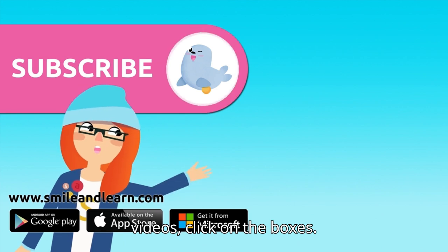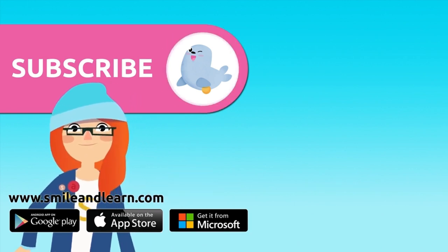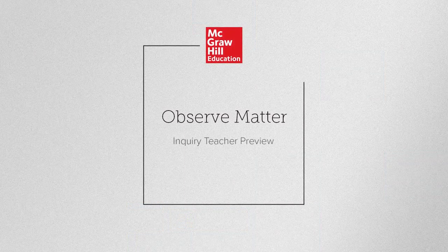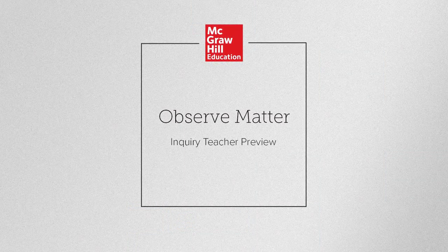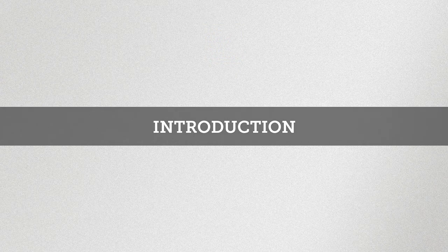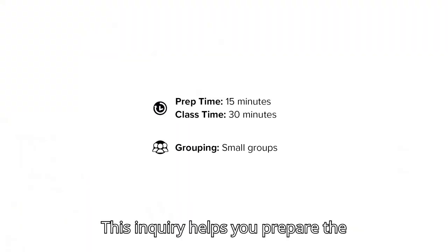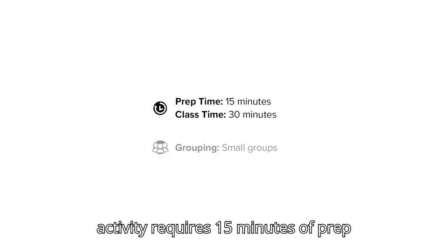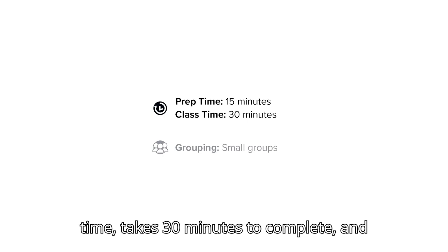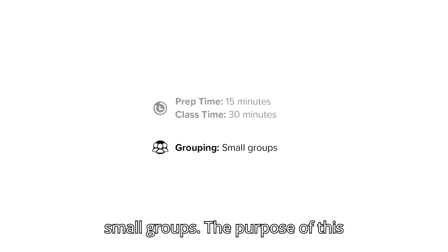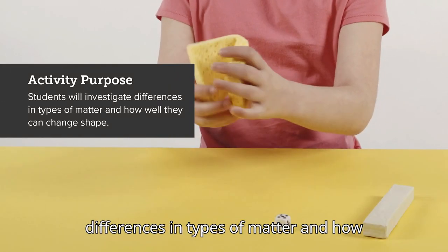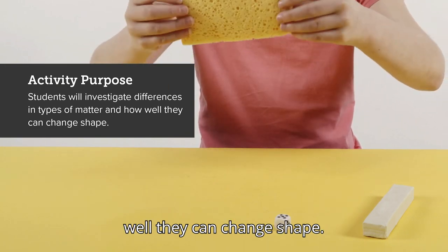This inquiry helps you prepare the Observe Matter activity. This hands-on activity requires 15 minutes of prep time, takes 30 minutes to complete, and works best when students are placed in small groups. The purpose of this activity is for students to investigate differences in types of matter and how well they can change shape.